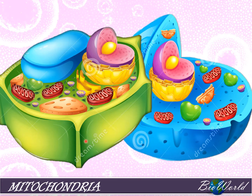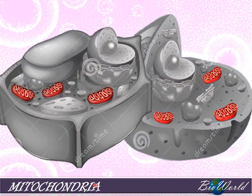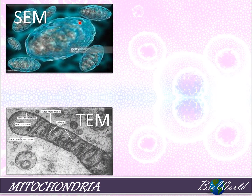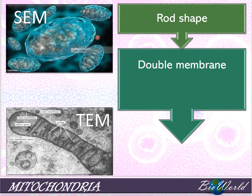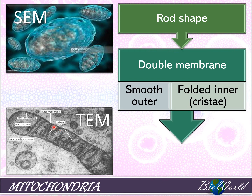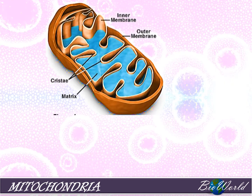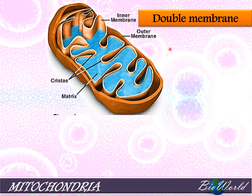Let's now discuss the third largest organelle in plant cells but the second largest in animal cells — that is the mitochondria. Under both scanning and transmission electron microscopes, mitochondria is a rod-shaped organelle with a double membrane. The outer membrane is smooth, while the inner membrane is folded extensively to form structures called cristae. The liquid inside the mitochondria is called the matrix.